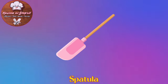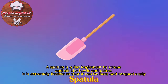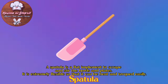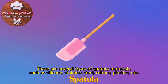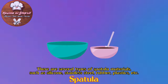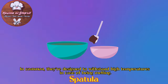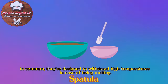Spatula: A spatula is a flat implement used to scrape and stir bowls and plates. It is extremely flexible so that it can be bent and torqued easily. There are several types of spatula materials, such as silicone, stainless steel, rubber, and plastic. They are designed to withstand high temperatures to avoid melting.